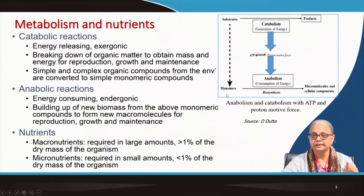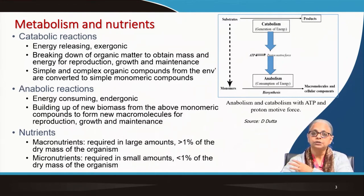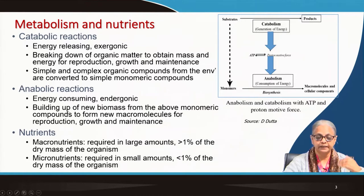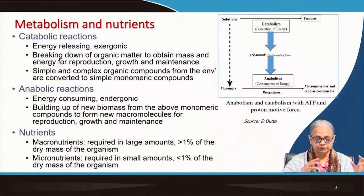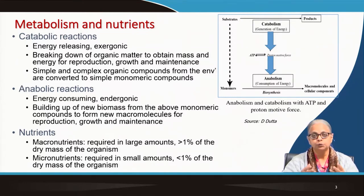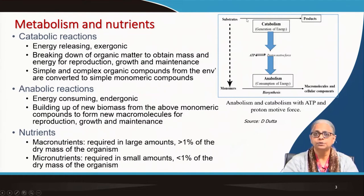ATP is then utilized in anabolic reactions to go from monomeric units to polymeric units. Breaking down is necessary to obtain mass and energy for reproduction, growth, and maintenance, while anabolic reactions are used for building new biomass from the monomeric units generated in catabolic reactions. Metabolism is the combination of catabolic and anabolic reactions together. Different organisms obtain their energy in different ways — all organisms do not eat the same food, and we will look at how different organisms derive energy from different substrates.